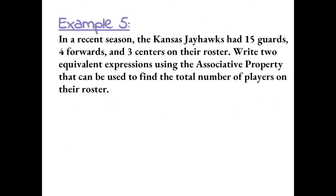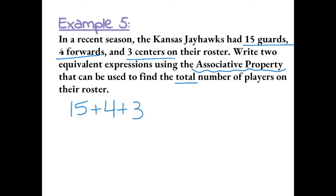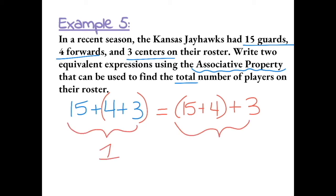In a recent season, the Kansas Jayhawks had 15 guards, 4 forwards, and 3 centers on their roster. Write two equivalent expressions using the associative property that can be used to find the total number of players. To find the total, I need to add 15 plus 4 plus 3. The associative property tells me it doesn't matter which order the numbers are grouped. I could group (4 plus 3) and add first, or group (15 plus 4) and add those first, then add 3. These two expressions are equivalent by the associative property.